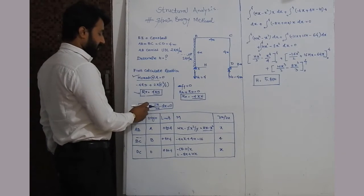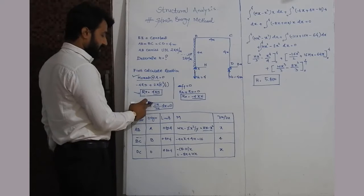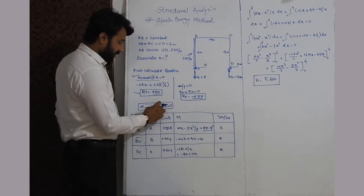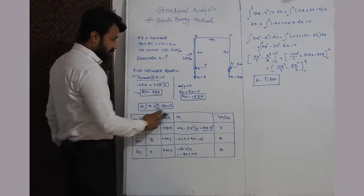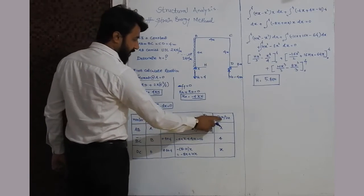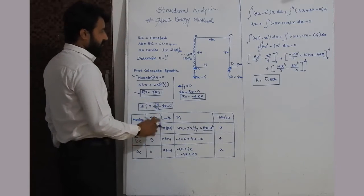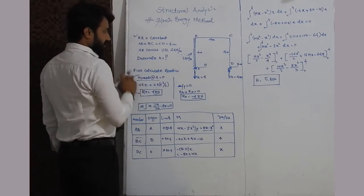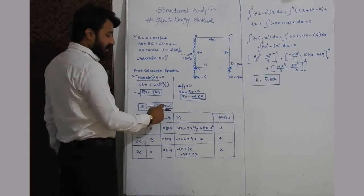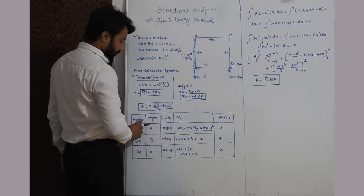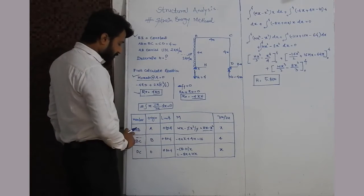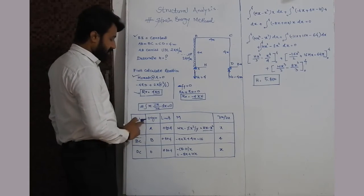We know the strain energy equation: Σ∫M·(∂M/∂H) dx = 0. We need to determine M and ∂M/∂H for each individual member. We draw a table with columns: member, origin, limit, M, and ∂M/∂H. If EI is not constant, an additional EI column is added with separate values for each member.